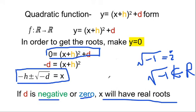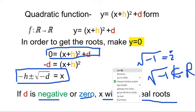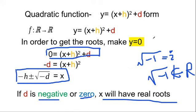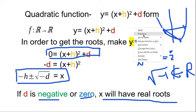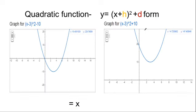Now we have found the minimum point or vertex and the roots. It is quite easy to sketch a graph because the y-intercept is not always necessary. If you know the vertex and the roots, you can easily sketch the quadratic function. For example, when d equals minus 10, the graph cuts the x-axis at two points. When d is positive, the graph has shifted upward along the positive y-axis, leaving you with no roots.